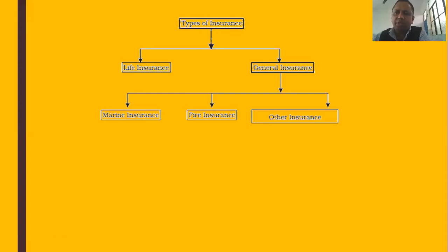Third, life insurance is not a contract of indemnity. The life of a human being cannot be measured in monetary terms, which is why the amount payable in life insurance on the death of the assured is fixed in advance.